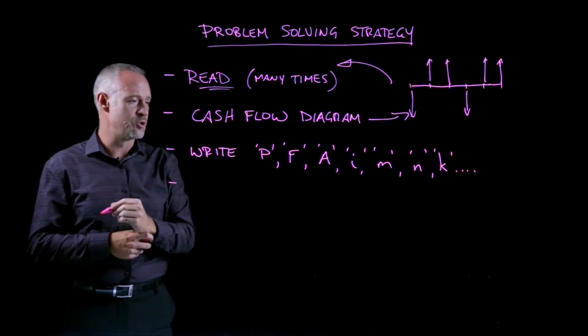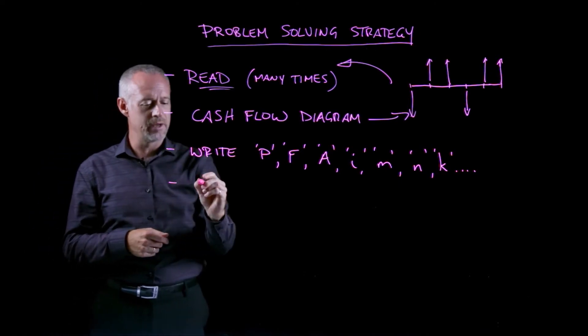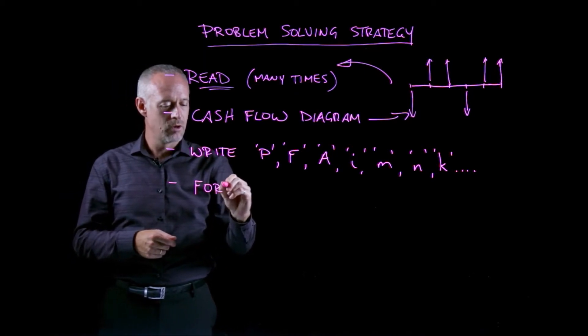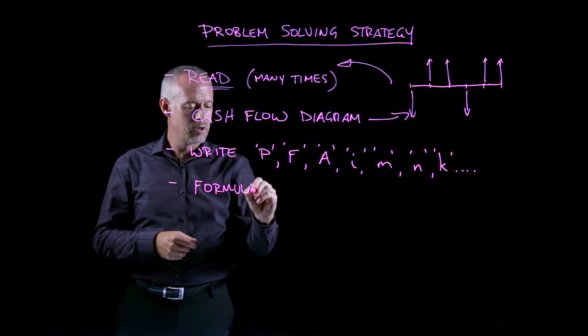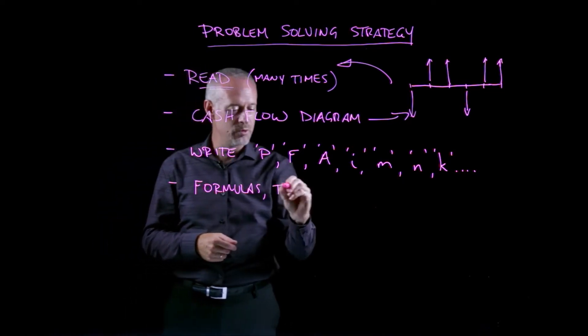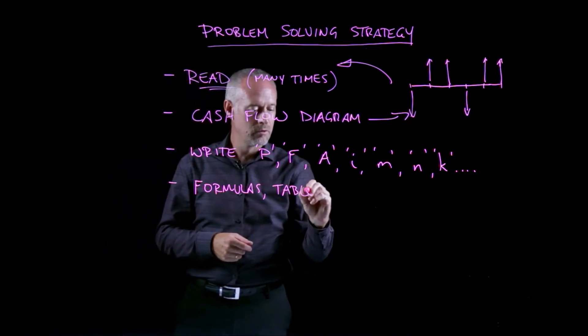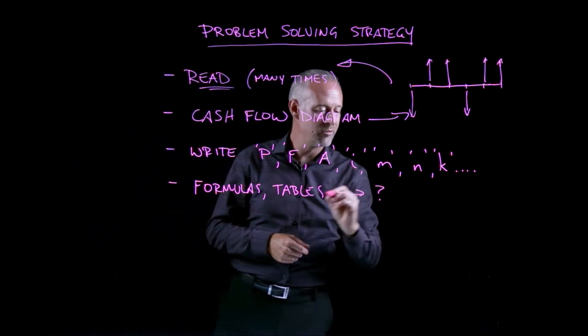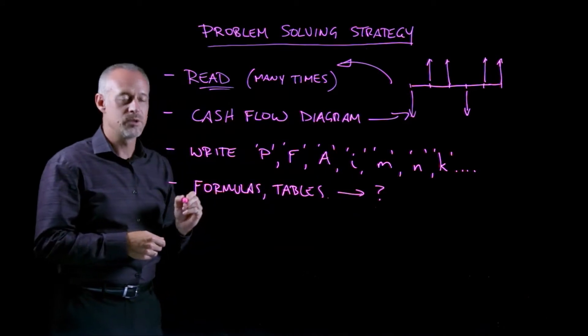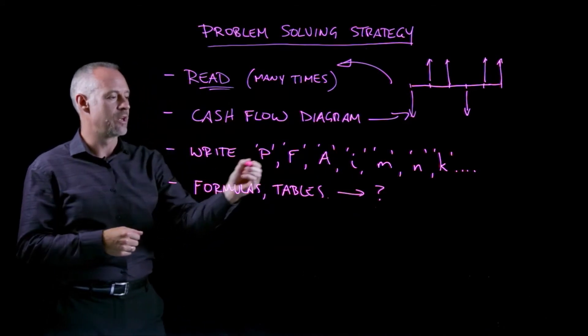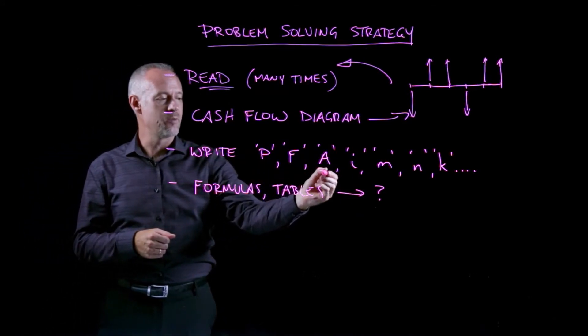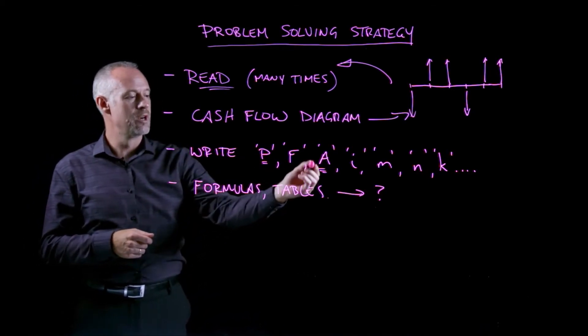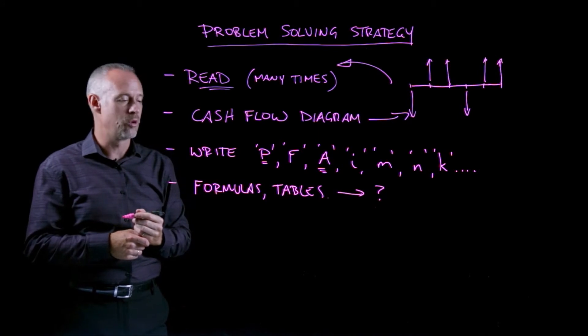The next thing I would suggest you do is identify any formulas or tables that you needed to solve for whatever the variable is you're looking for. So it may be that in the problem we're given an A and we'd like to find a P. So we need to identify the formulas or the tables where we can find the variable that we're looking for.